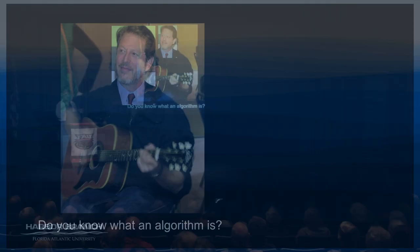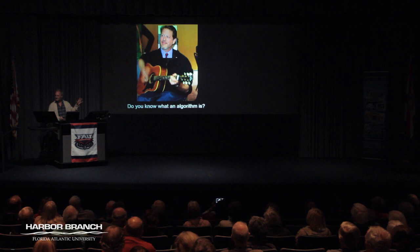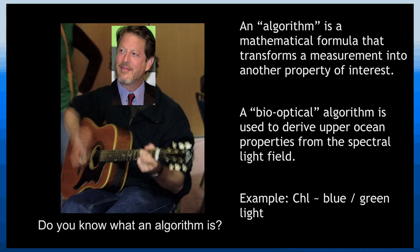Now, when I say algorithm — a bio-optical algorithm is a transformation from what we measure into a property we want to know about. We develop bio-optical algorithms that transform the light field into properties like algal concentration. The relationship between blue and green light is a way to get to the concentration of algae.